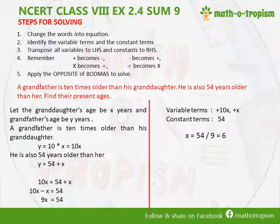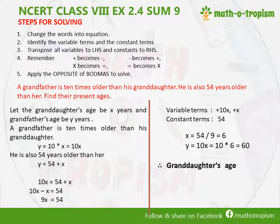Since X is 6, we need to find Y, which is the grandfather's age, which is 10X. 10X means 10 into 6, because we found X is 6, so that comes to 60. Therefore, the granddaughter's age is 6 years and the grandfather's age is 60 years.